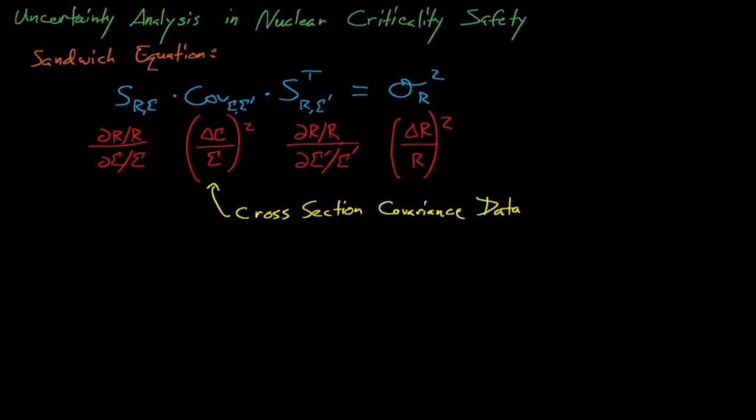The sensitivity coefficients that go into the sandwich equation must be finely resolved and reasonably converged, which is why we cannot reliably use direct perturbation methods to prepare sensitivity coefficients for nuclear criticality safety analyses. It's just not feasible to compute reliable, reasonably converged sensitivity coefficients for a system with that many uncertain parameters.